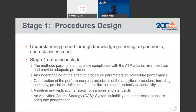Stage 1 is procedure design, the method development stage. Here we define what are the method parameters that allow compliance with the ATP criteria—minimizing bias and providing adequate precision. We understand the effects of procedure parameters on procedure performance, mainly through robustness. We optimize performance characteristics including accuracy, precision, calibration, and selectivity/sensitivity. Finally, we establish a preliminary replication strategy for samples and standards—something not usually included in the traditional approach—and we define the analytical control strategy, which includes system suitability parameters and other tests that will assure adequate performance.